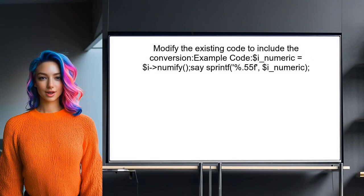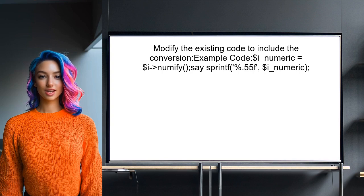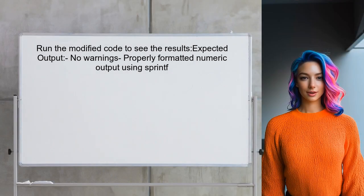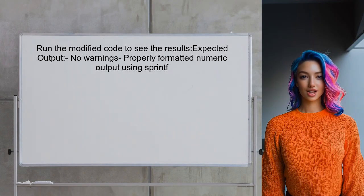The user should modify their existing code to include this conversion. They can do this by replacing the instance of the BigRat object with its numeric equivalent before using SprintF. After making these changes, the user can run their code again, and it should execute without the warnings and display the formatted output as expected.